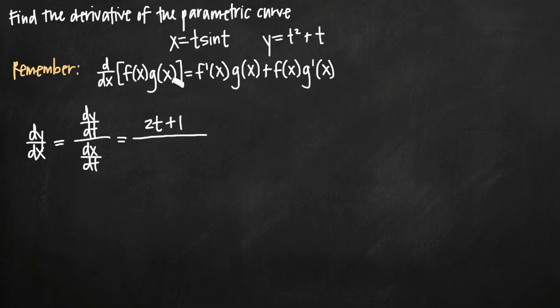So remember that product rule tells us that when we have two functions that are multiplied together, we have to take the derivative of the first one, multiplying it by the second, then leave the first one alone and take the derivative of the second, and we take the sum of those two products.